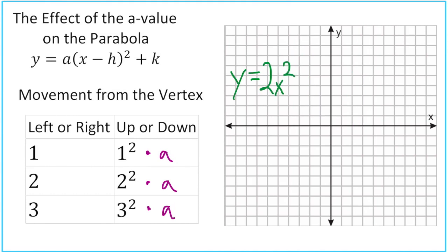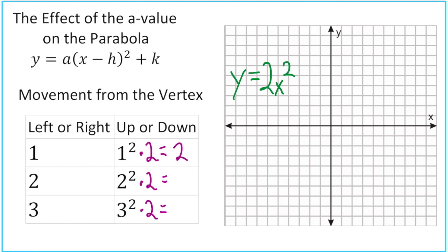Let's try this again, only this time we're going to change the a value to two. In my table, instead of going one squared times an a value of one, we're going to go one squared times an a value of two, two squared times two, three squared times two. So when we go left or right one, we're going to go up or down two, because that's one squared times two. Two squared is four, four times two is eight. Three squared is nine, times two is 18.